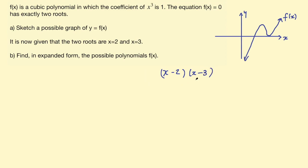And if it only has two roots, one of those is going to be squared - either (x - 2)² or (x - 3)². So my two polynomials here will be f(x) = (x - 2)²(x - 3), and then down here I'll do another one: f(x) = (x - 3)²(x - 2). And I need to expand those out.